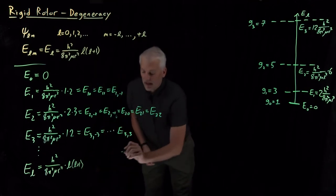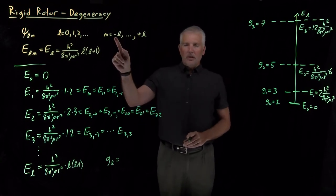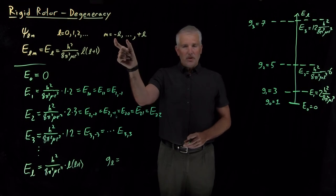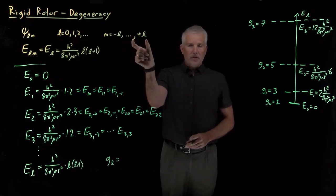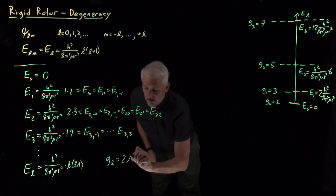The degeneracy of that level, because M can be anywhere from negative L up through zero, all the way to positive L. There's L numbers that are negative, there's L of these numbers that are positive, and the zero in the middle is an extra one. So, the total degeneracy is 2L plus 1.